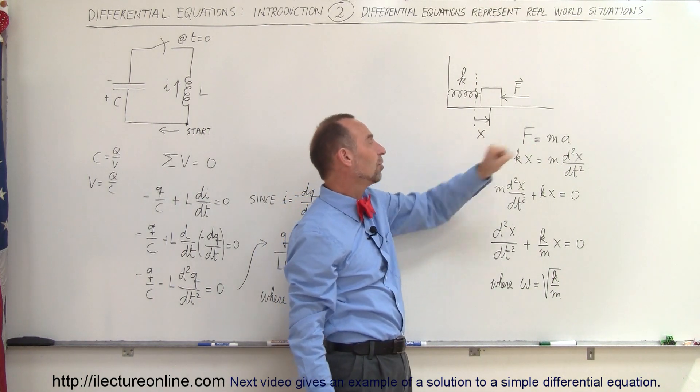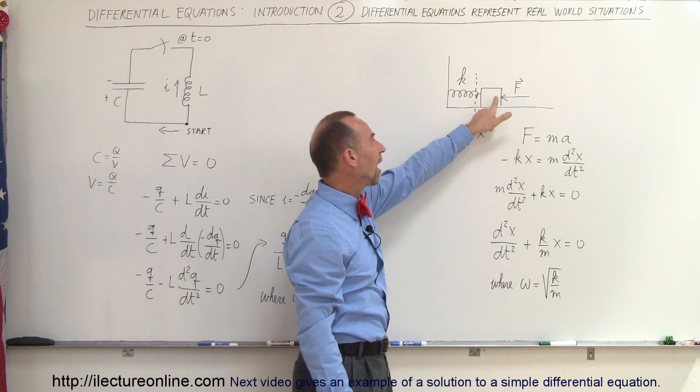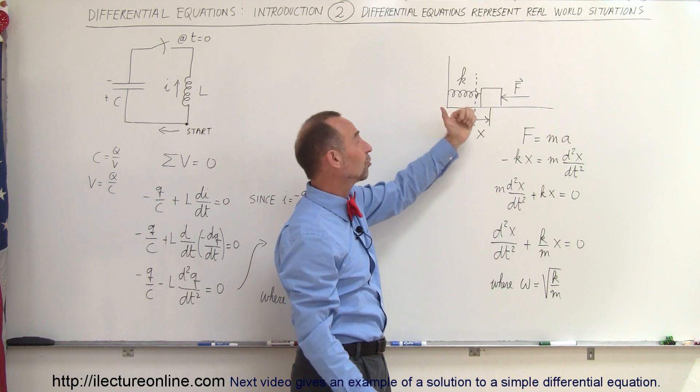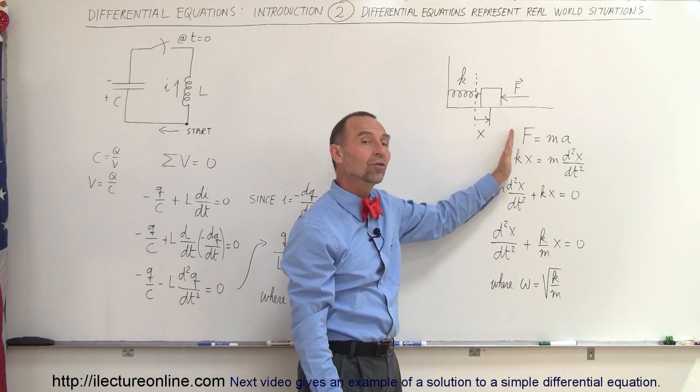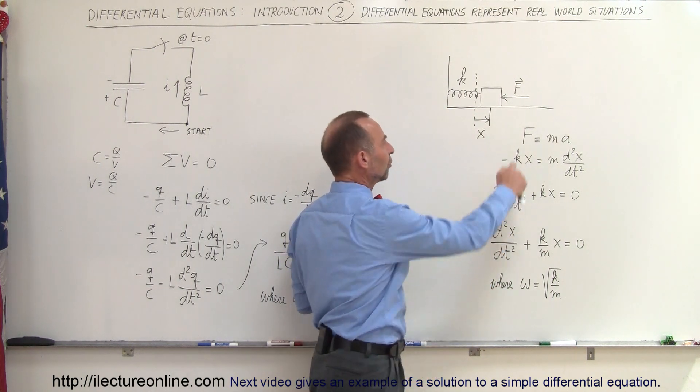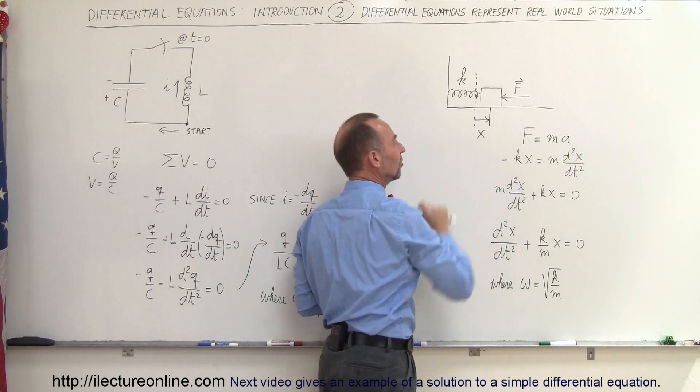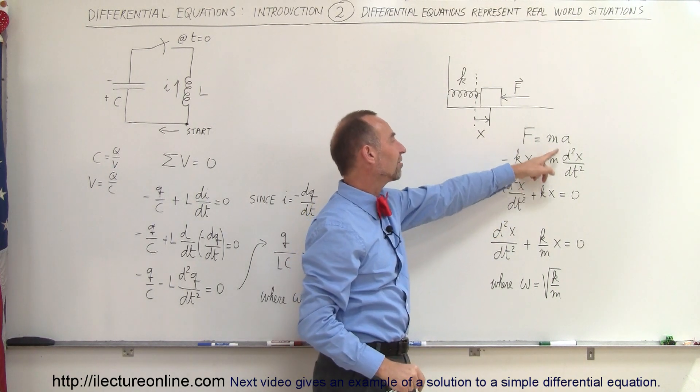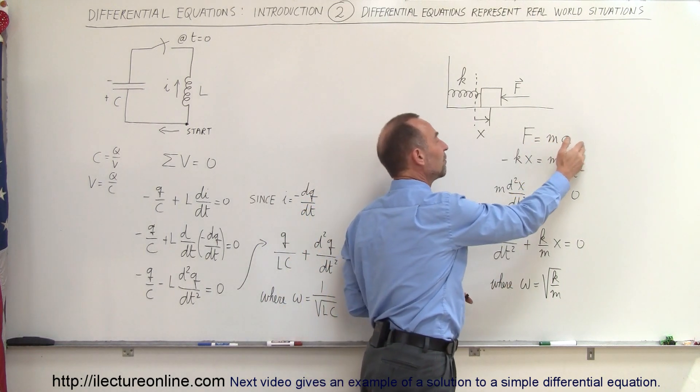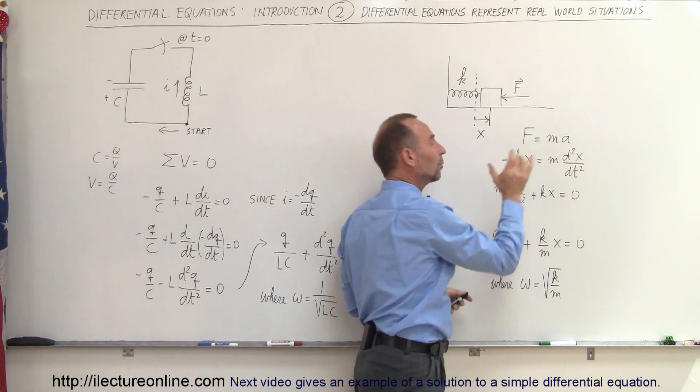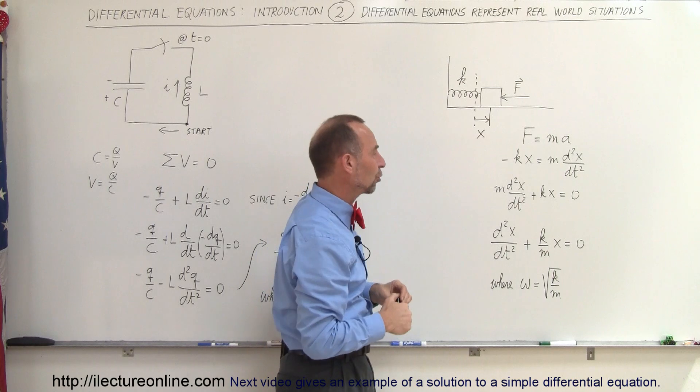We know that F equals MA, Newton's second law, and the force on the block based upon the spring, the spring will be pulling it this way when the block is extended to the right by distance X. So the force on the block is minus the spring constant times the distance X, and that should equal the mass times acceleration, and since we can write the acceleration as the second derivative of position with respect to time, we can write it like a second order differential equation.